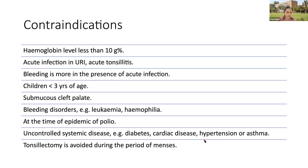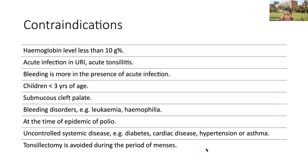Contraindications include hemoglobin below 10 g%, which we try to build up before surgery. Acute URI and acute tonsillitis are contraindications, as bleeding is more in the presence of acute infection, so infection is treated first. Children less than three years of age, cleft palate, bleeding disorders, epidemic of polio, and uncontrolled systemic diseases like diabetes, cardiac disease, hypertension, and asthma are also contraindications. In females, it is avoided during menstruation.